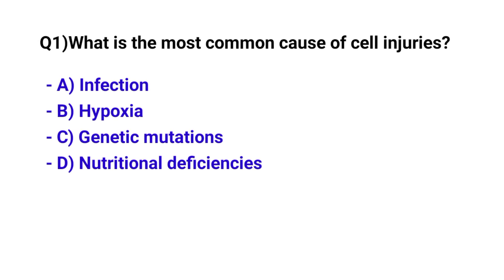Question number 1. What is the most common cause of cell injuries? The correct option is B. Hypoxia.